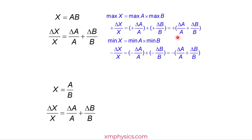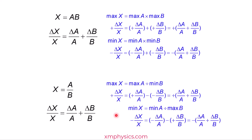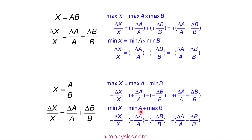Because of that, whether you are on the positive side or negative side, you can deviate by delta A over A plus delta B over B. When you are doing X equals A divided by B, the maximum value of X happens when A is maximum but B is minimum — so you divide by the smallest possible value of B. And the minimum value of X happens when A is minimum but B is maximum. Because of that, the double-negative situation happens again, and therefore whether you are on the positive or negative side, you are off by delta A over A plus delta B over B.